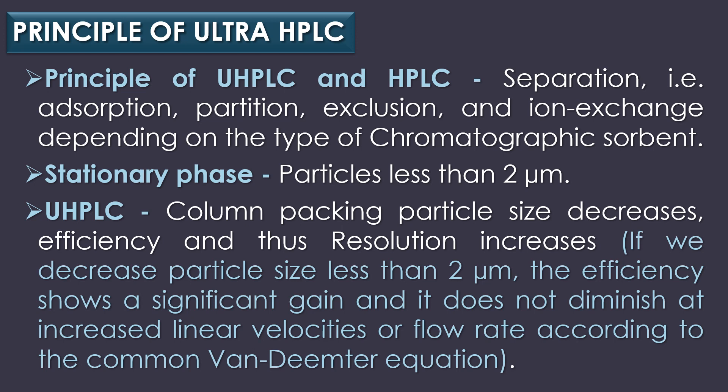The basic principle of UHPLC and HPLC is the same and depends upon the mode of separation, i.e., adsorption, partition, exclusion, and ion exchange, depending on the type of chromatographic solvent. UHPLC is predicated on the principle of using a stationary phase consisting of particle size less than 2 micrometers, while HPLC columns are typically filled with particles of 3 to 5 micrometers. If particle size decreases to less than 2 micrometers, the efficiency shows a significant gain and does not diminish at increased linear velocities or flow rates according to the Van Deemter equation.